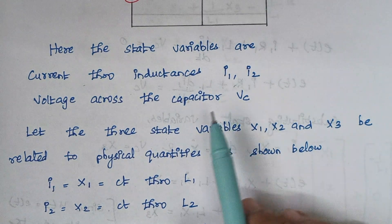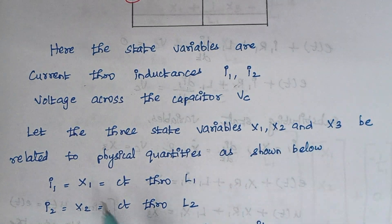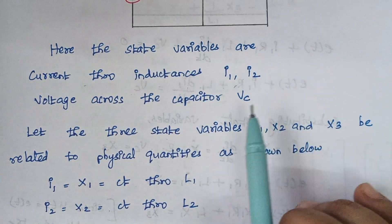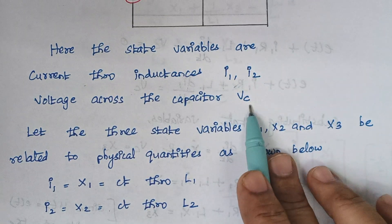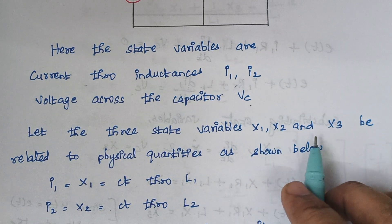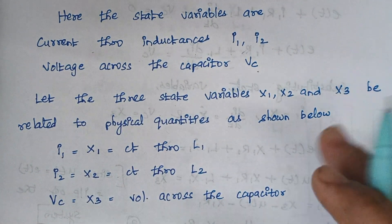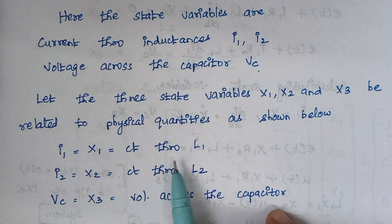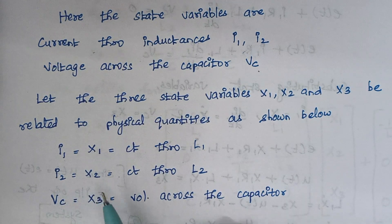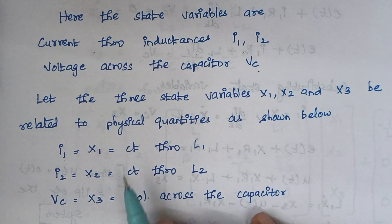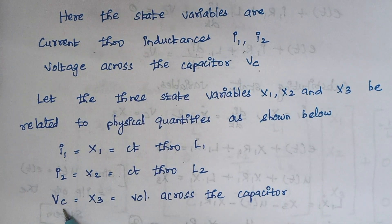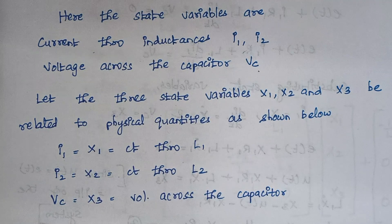Let the three state variables X1, X2, and X3 be related to the physical quantities from the circuit. I1 is the current through L1 and we equate I1 to X1. Likewise, I2 is equal to the current through L2 and is equal to X2. And Vc, the voltage across the capacitor, is equal to X3.